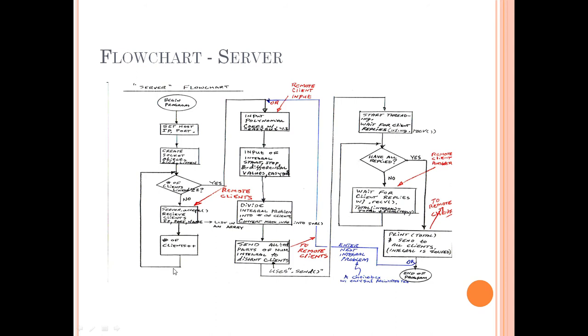This loop here, a while statement, waits until there's at least two clients linked. Then the polynomial is entered, either locally or remotely. The parameters of the integral problem at hand are entered, and then the problem is divided into the number of clients. Using the .send function, the mathematical parameters are sent as a string to the clients, and threading is begun. The server waits for the clients to respond. Once all are applied, the partial integral terms are summed together, and then the answer is broadcast to all the clients. From there you can move on to solving another problem or end the program.